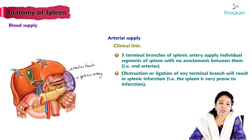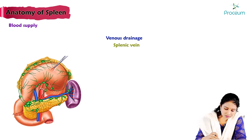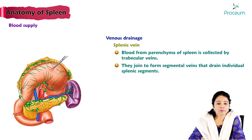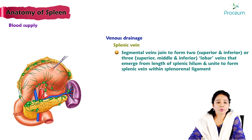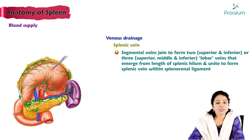Venous drainage: blood from the parenchyma is collected by trabecular veins, which join to form segmental veins draining individual splenic segments. Segmental veins join to form either two lobar veins (superior and inferior) or three lobar veins (superior, middle, and inferior), which emerge from the splenic hilum and unite to form the splenic vein within the splenorenal ligament.